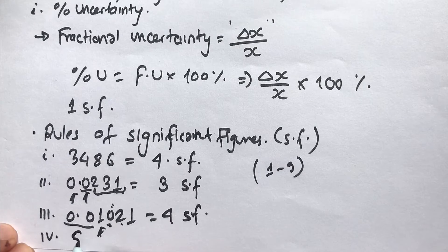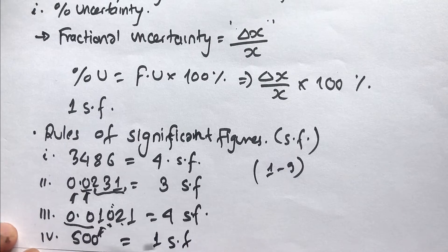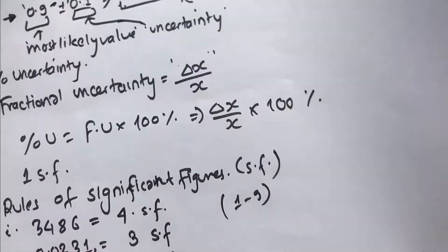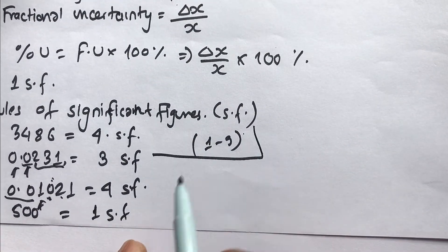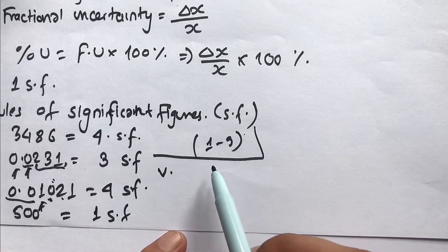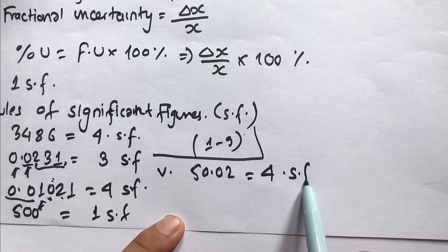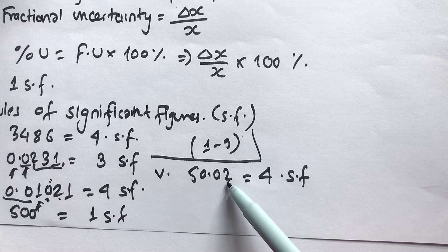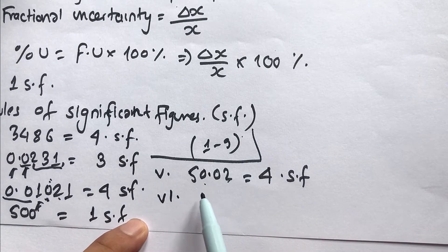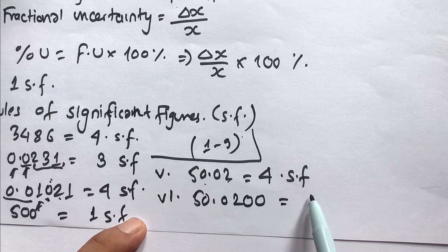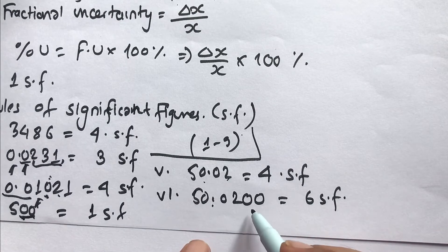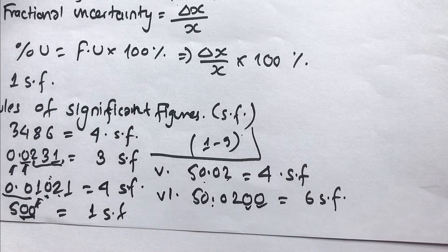Ending zeros in a whole number are insignificant. For example, if I have 50.02, that number has four significant figures, and the ending zero is insignificant. But if there is a number after the zeros, those zeros become significant. If I have 50.0200, that number has six significant figures — the ending zeros after the decimal point are significant.